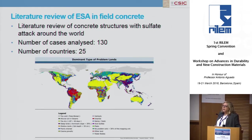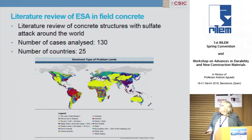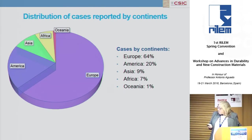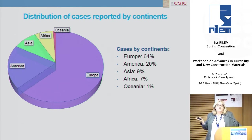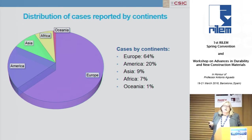With respect to the literature review, we have analyzed more than 130 cases from different countries — 25 countries around the world — related with the action of external sulfate attack in different circumstances. The distribution of the review is not exactly related with the real situation, but these are the cases reported and published in different papers. This is the information, but surely there are more cases that have not been reported yet.